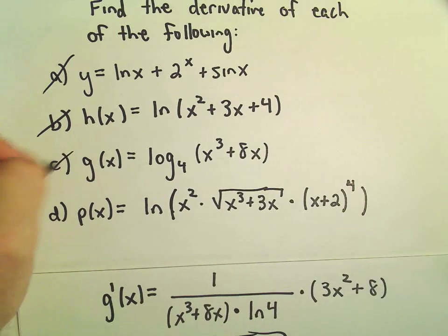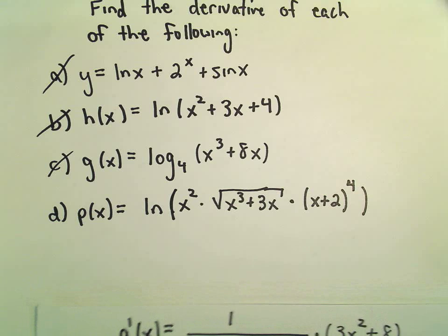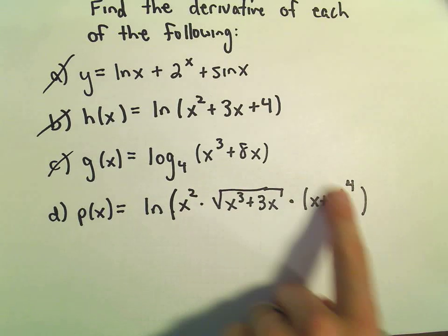Alright, part D illustrates something that's important with logarithms. We could take the derivative, we could do 1 over all of this. And then we would have to take the derivative of all the inside stuff by the chain rule.